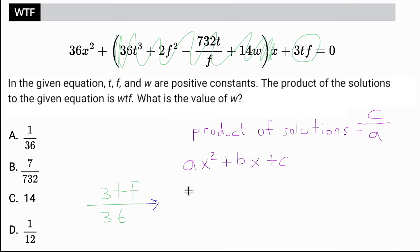I can then simplify this into 1TF over 12, and it says the product of the solutions is WTF. So this would be equal to WTF.